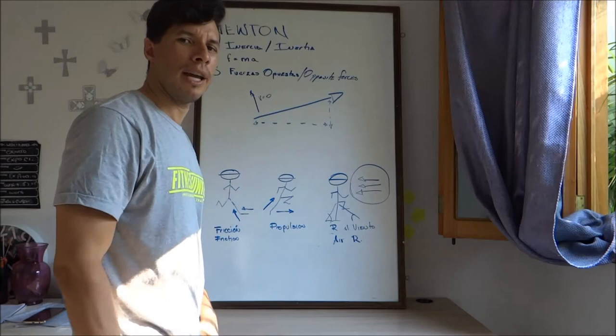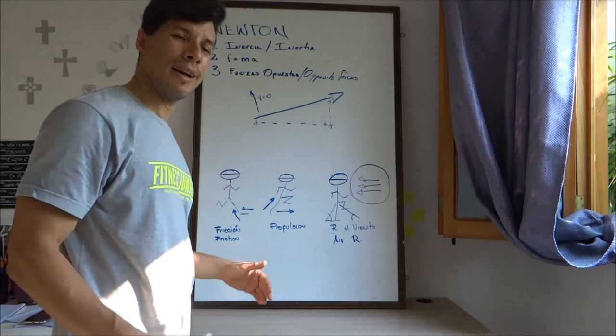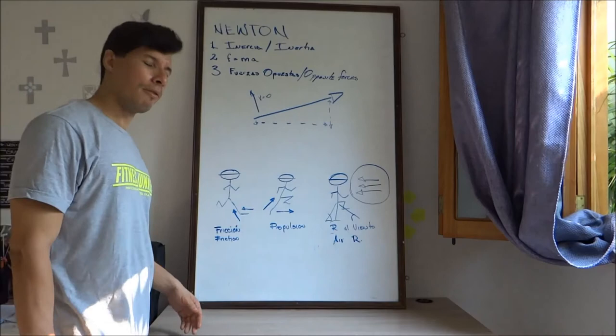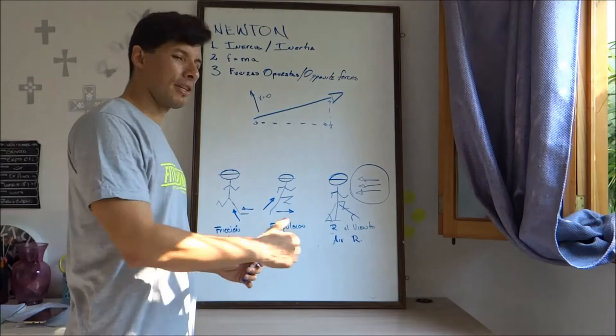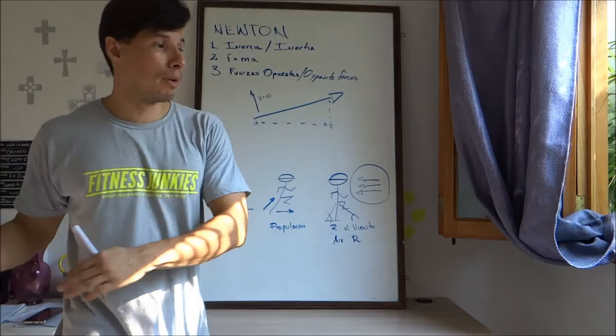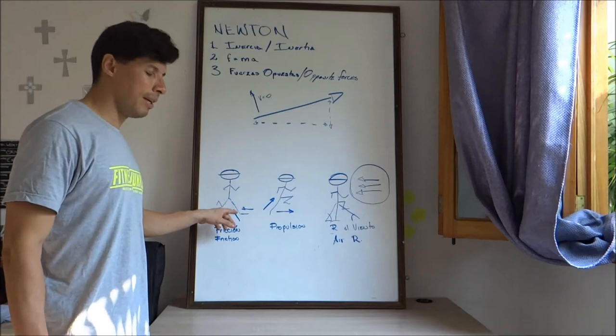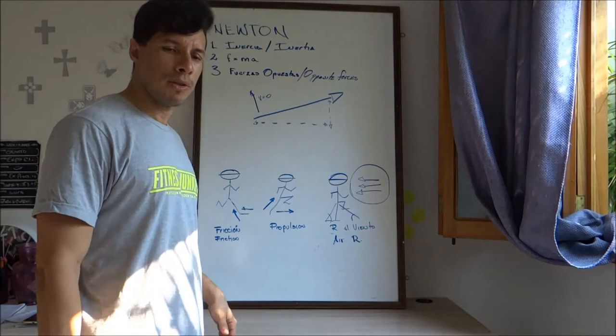The other one is, of course, propulsion: how much are you pushing yourself or creating force forward? And of course, propulsion has the vector that's pushing you horizontally. But if you see the position of my leg, there's another vector this way, right? So we have a vertical component too.